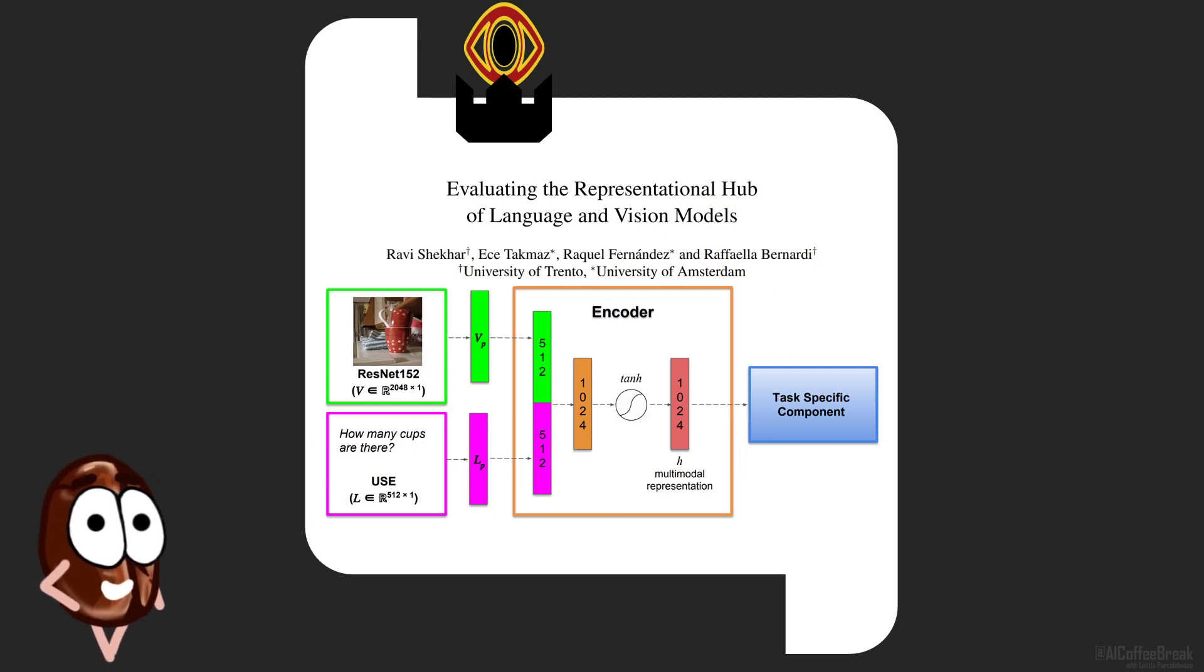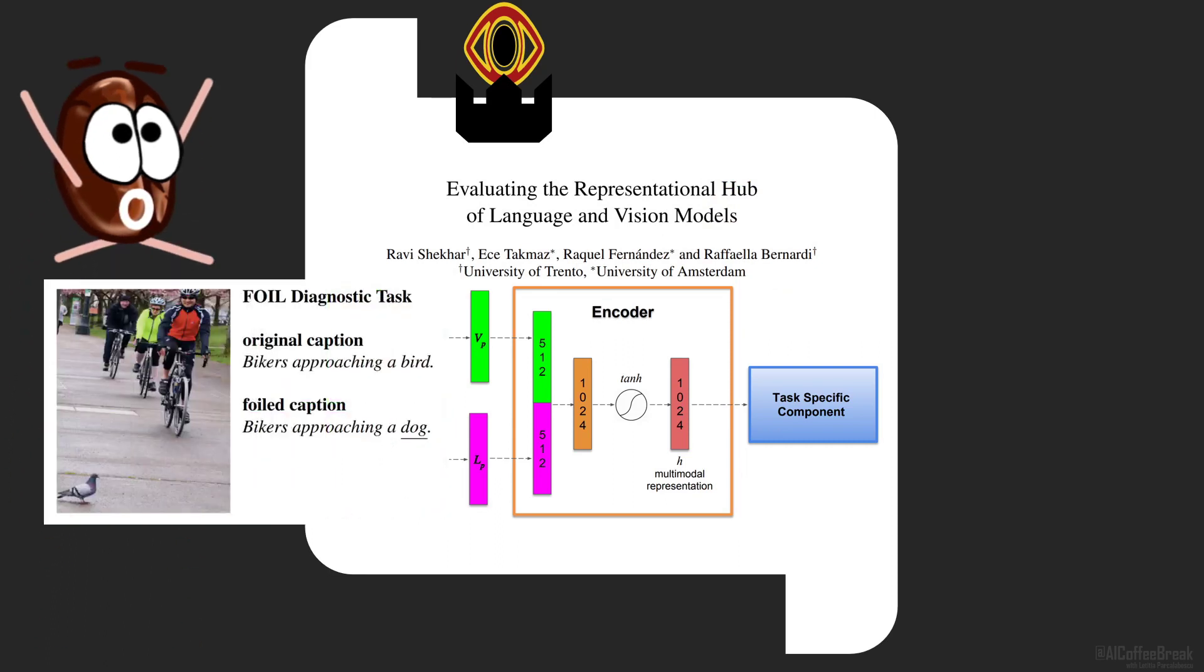With this architecture, the authors train a well-performing VQA model on the VQA dataset. But then, they want to test it to see how well the model considers both modalities when delivering the answer. For this, they do crazy things with the dataset. They replace nouns in half of the image captions with other nouns, so that they do not fit the picture anymore. Then, they let the same learned weights from the VQA task predict whether the caption does fit the image or not. For more information on this diagnostic procedure, check out our video on probing linked below.